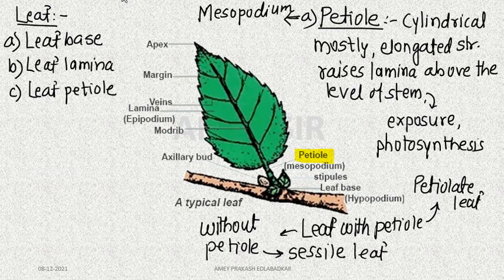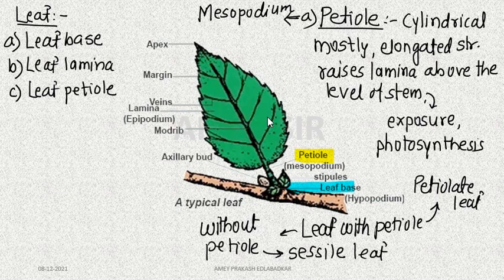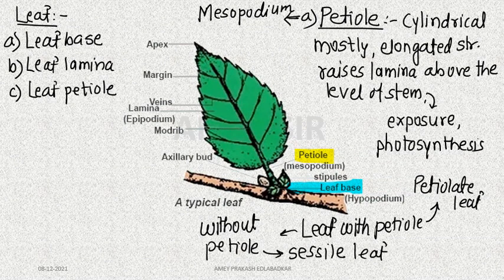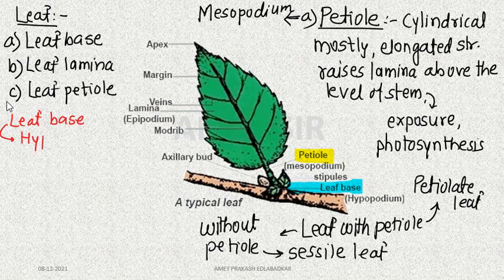The petiole — called mesopodium — is the middle part. The point where the petiole attaches to the stem represents the leaf base. The lower part of the leaf, which attaches the leaf to the stem, is given the term hypopodium. Sometimes you cannot easily differentiate the leaf base from the petiole.